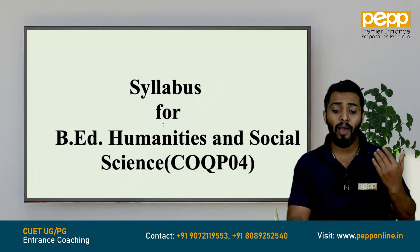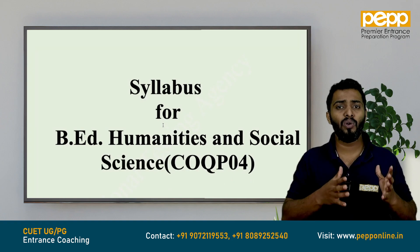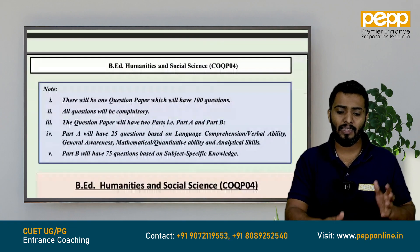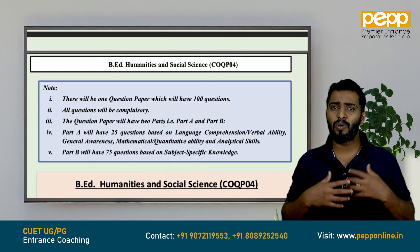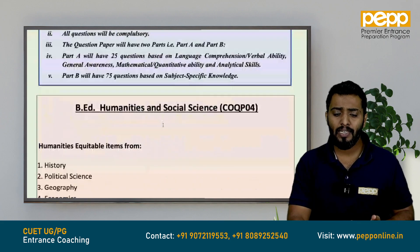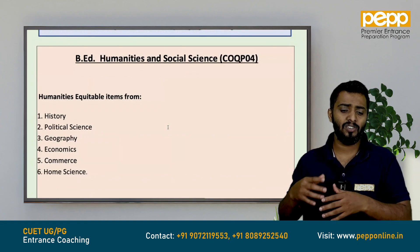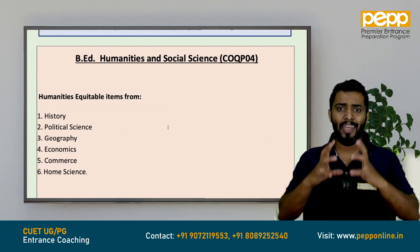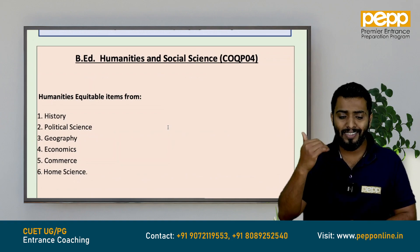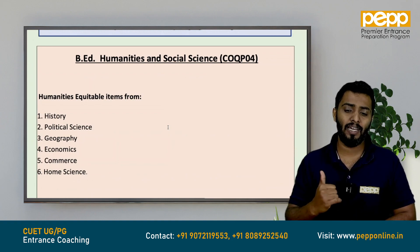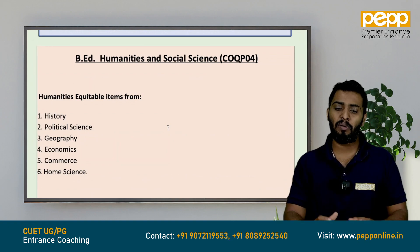The syllabus for B.Ed. humanities and social science falls under COQP 04. Similar to COQP 03, it has Part A — general knowledge, aptitude, and mathematical reasoning — and Part B, which is subject specific. The subjects include history, political science, geography, economics, commerce, and home science. Humanities and social sciences share the same syllabus structure, covering a total of 300 marks across these 6 subject-specific areas.